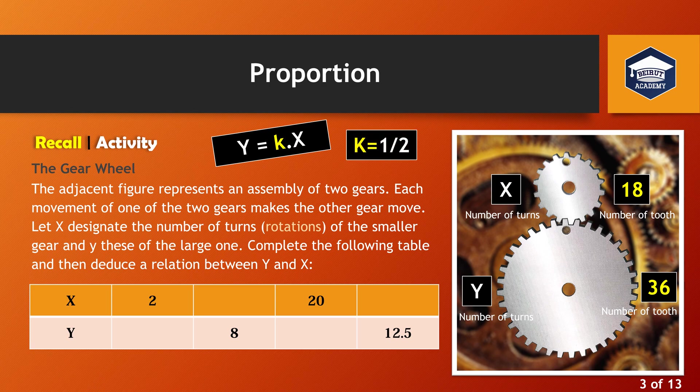Now we use the relation function to get the missing numbers in the table as follows: y equals half times 2 equals 1. Y equals 8, then 8 equals half times x, so x equals 16. Y equals half times 20 equals 10. Y equals 12.5, then 12.5 equals half times x, so x equals 25.